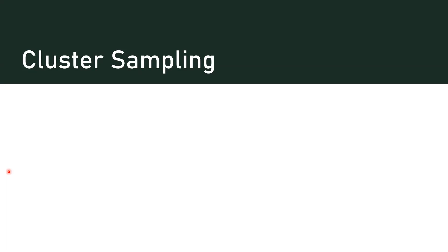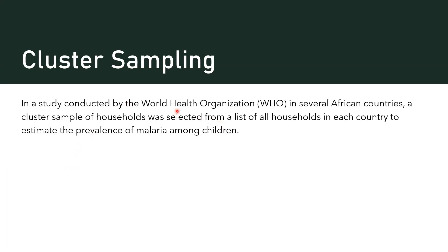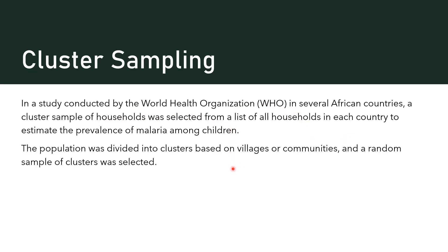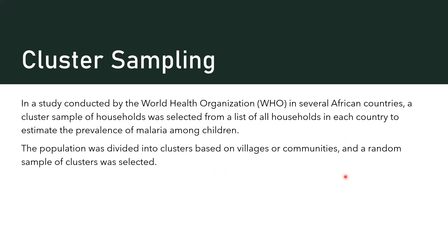All individuals within the selected clusters are then included in the sample. Here's a use case: a study conducted by the World Health Organization in several African countries selected a cluster sample of households to estimate malaria among children. The population was divided into clusters based on villages or communities, a random sample of clusters was selected, and all households within the selected cluster were included in the sample.